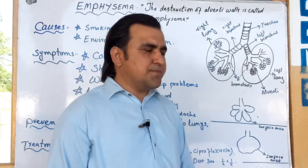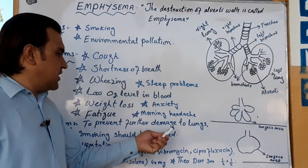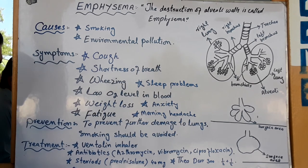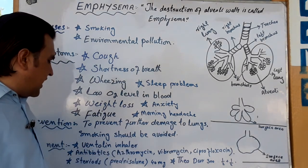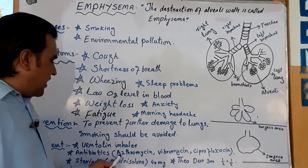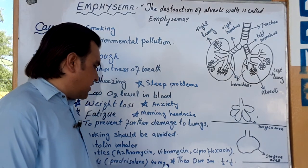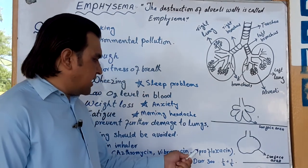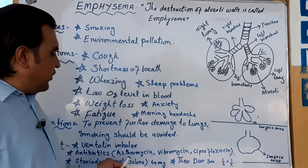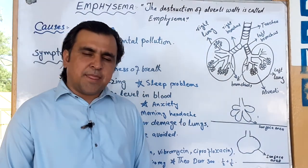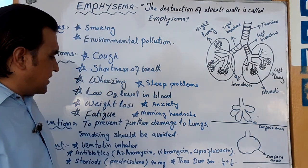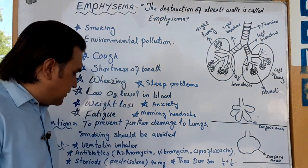If someone's smoking is causing major damage, it should be stopped. Treatment of diseases like Emphysema uses bronchodilators such as Ventoline and Inhalers. Antibiotics are also used — examples include Vibromycin, Ciprofloxacin, and Augmentin DS, which can be taken as tablets or capsules.